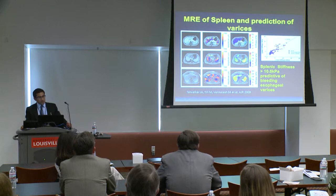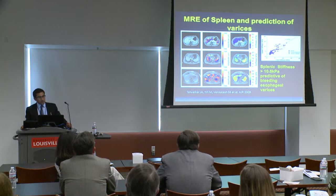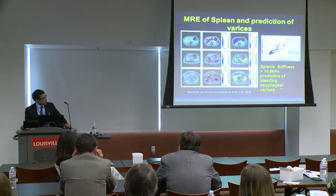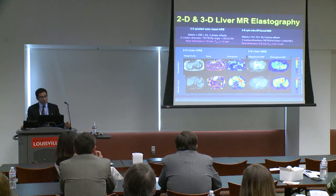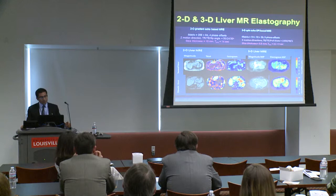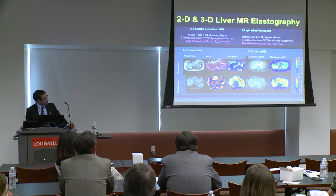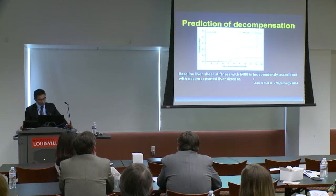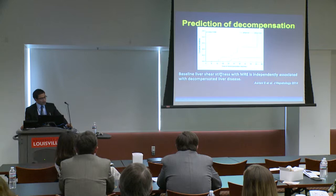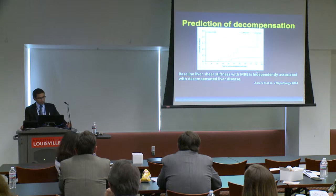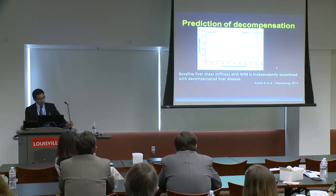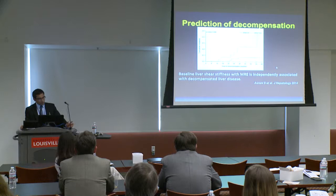MRE of the spleen can predict varices in chronic liver diseases — spleen stiffness more than 10 kilopascals predicts bleeding varices with 100% accuracy. We can also do 3D elastography, scanning the whole liver with 32 slices in about 2 minutes, giving a picture of overall fibrosis burden. We just published in the Journal of Hepatology that baseline liver stiffness greater than 5.8 kilopascals is independently associated with decompensated liver disease, especially after 3 years, showing how much of liver function is beyond repair capacity.